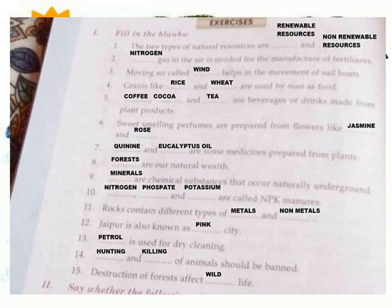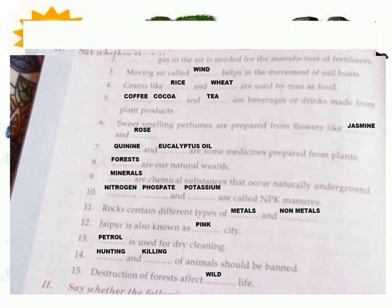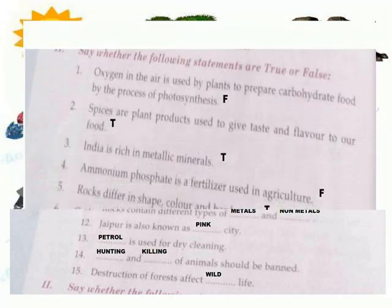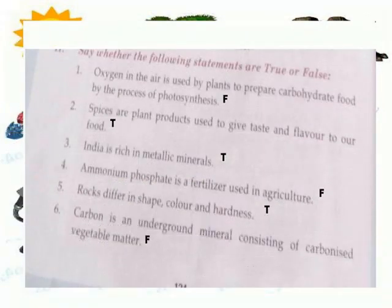True or false: Carbon dioxide in the air is used by plants to prepare carbohydrate food by the process of photosynthesis. Answer: False.